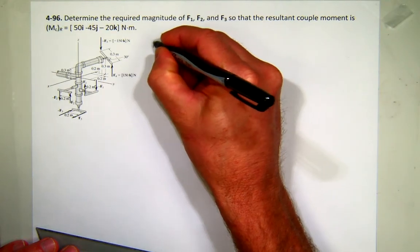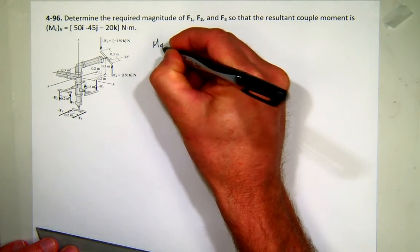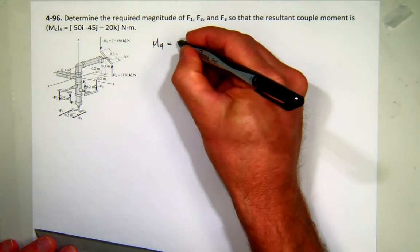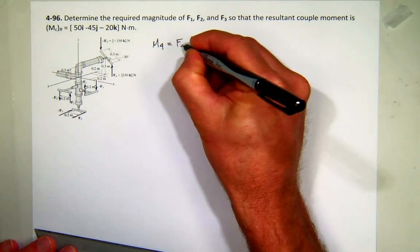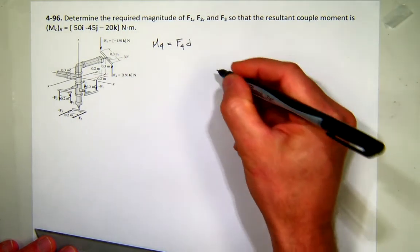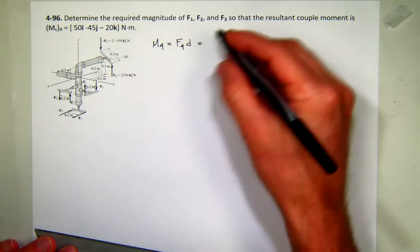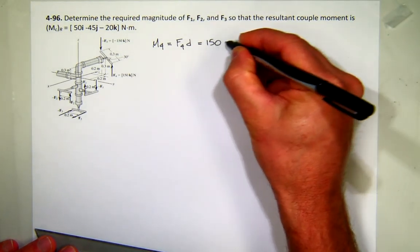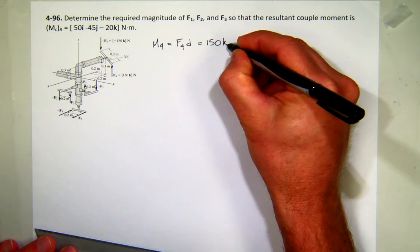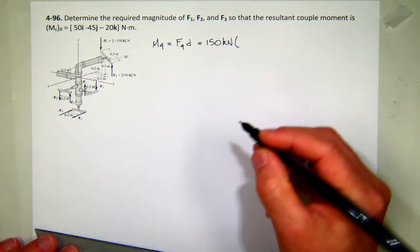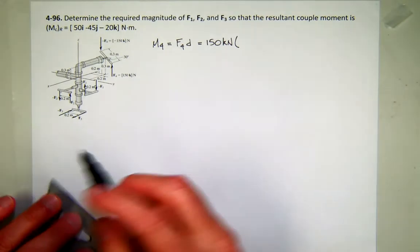So first, the magnitude of the force at F4, or the magnitude of the moment due to F4, will be F4 times that perpendicular distance. So what is that going to be? Well, according to this, the magnitude is 150, or the force, that's kilonewtons. And what's the distance? We want the perpendicular distance.